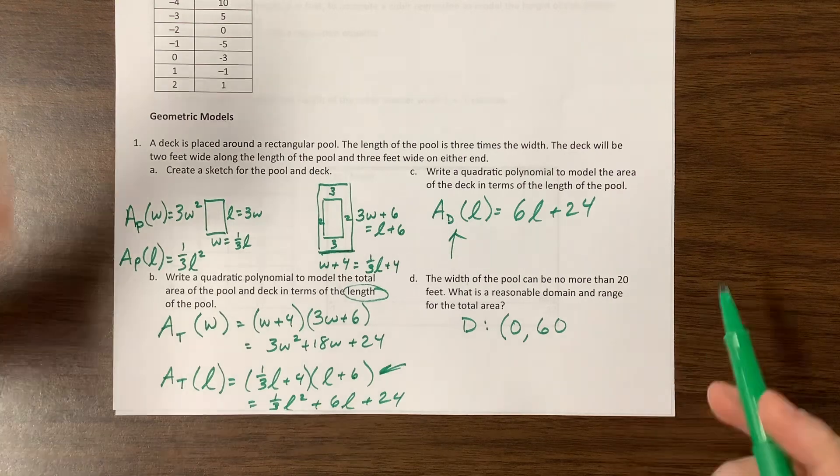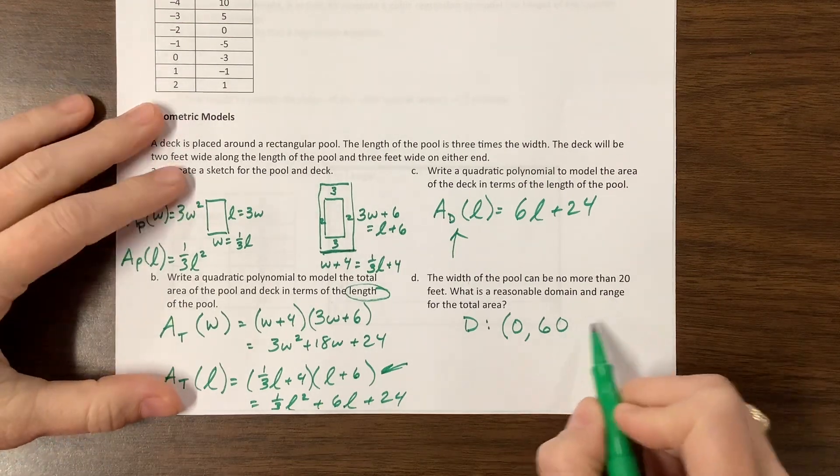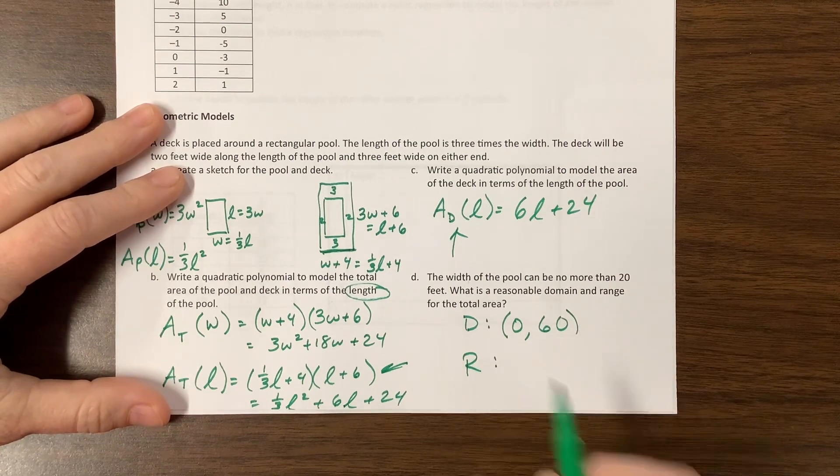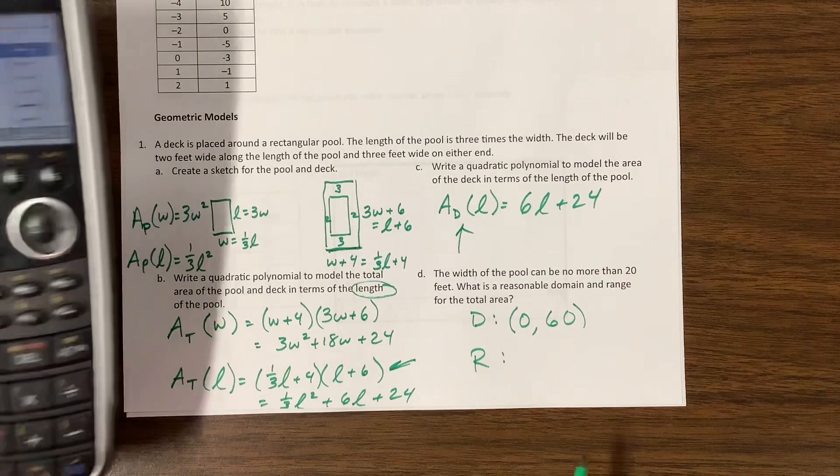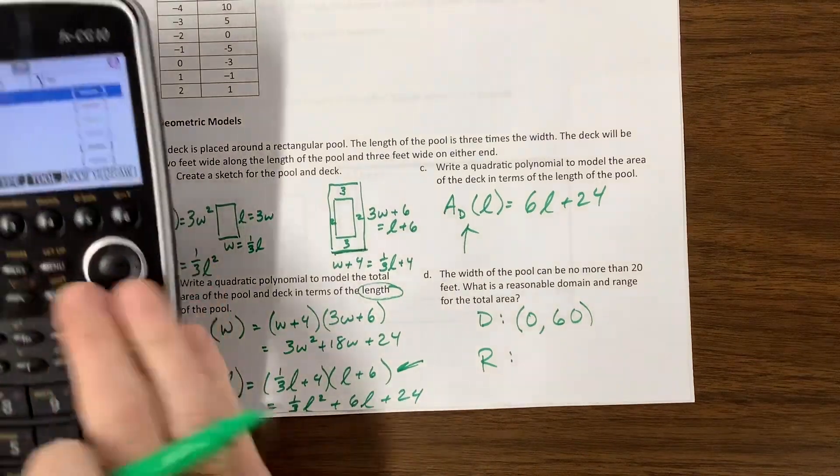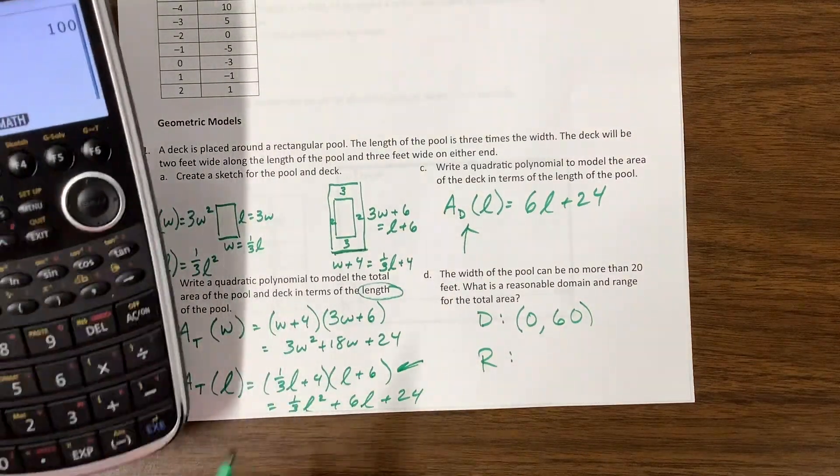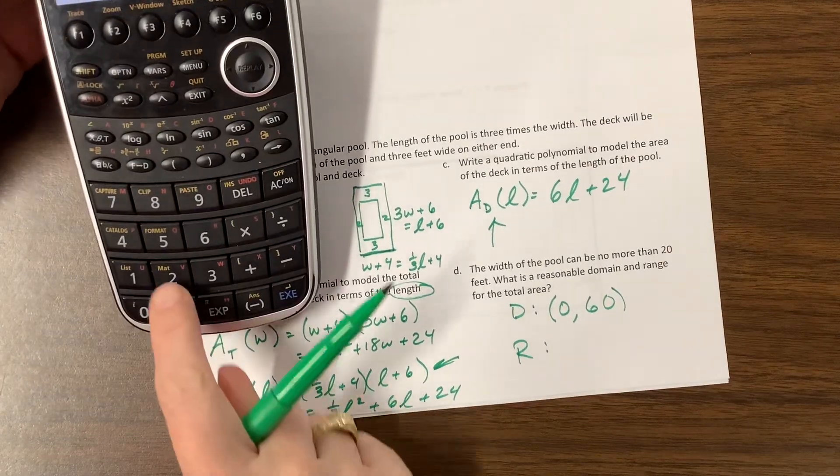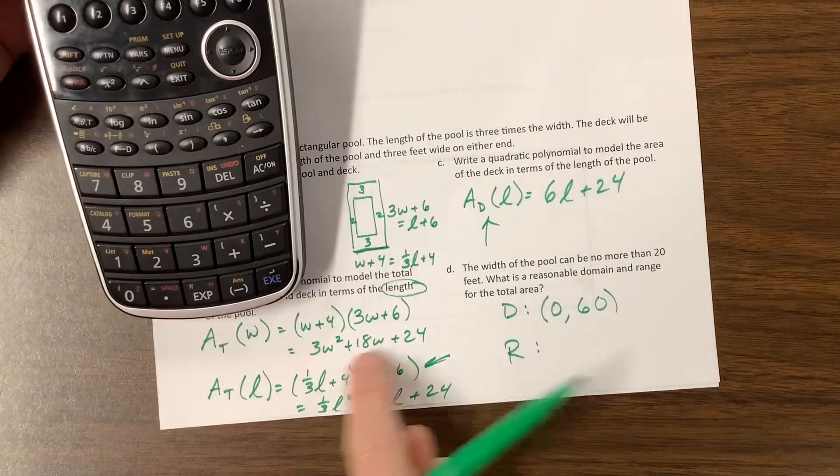Maybe, yeah. And then what I'd probably do, oh sorry, something got in my throat. My range, I would probably do something like, well, the area would be, if I plugged in 60 for my l, I'd have, well, that's kind of annoying. Let's plug in 20 for this one. 3 times 20 squared.